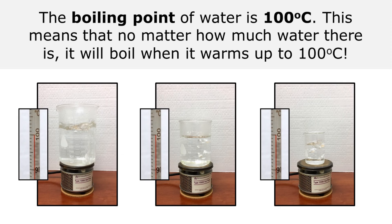The boiling point of water is 100 degrees Celsius. This means that no matter how much water there is, it will boil when it warms up to 100 degrees Celsius. This is not about how much time it takes — it may take more time to heat up the large beaker of water than the small beaker. But when all three beakers start to boil, they will all be at the temperature of 100 degrees Celsius.